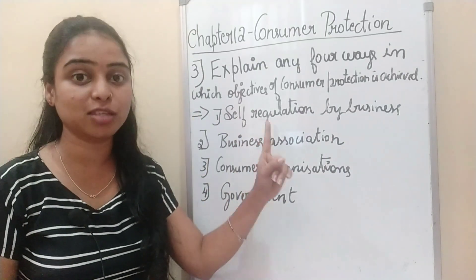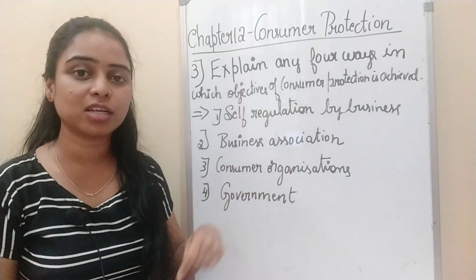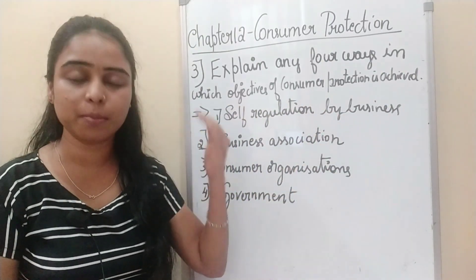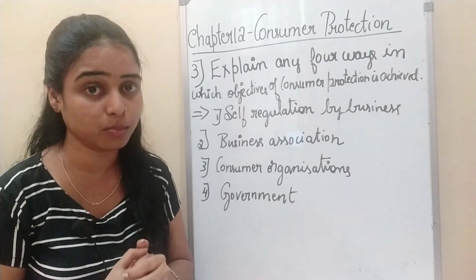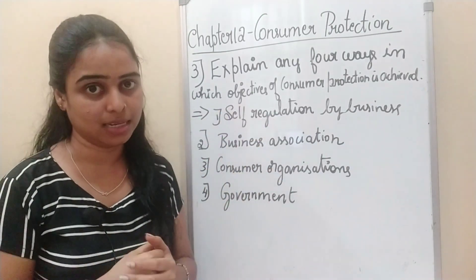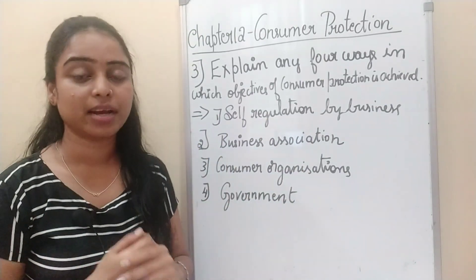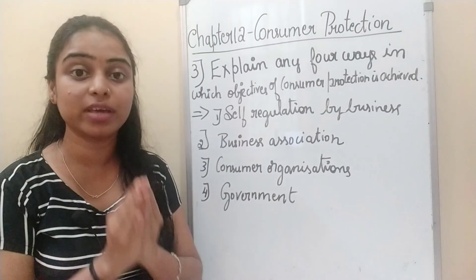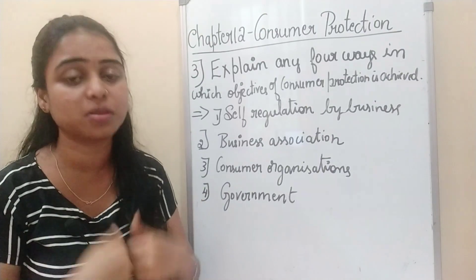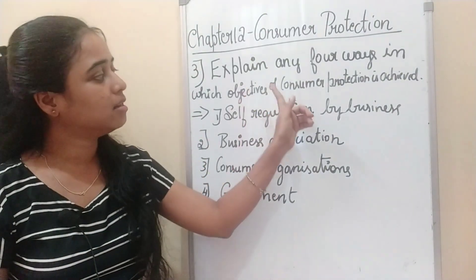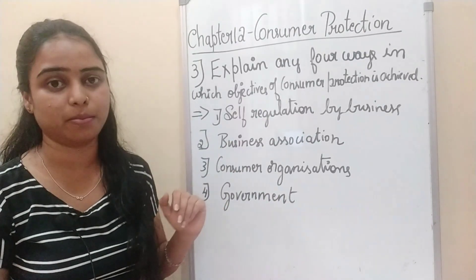The first way to achieve the objective of consumer protection is self-regulation by business. Some enlightened businesses themselves know that cheating and malpractices are not good, and that by avoiding them we can gain profit. So the first method is self-regulation by the business.